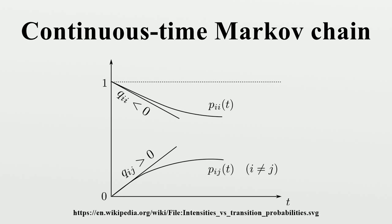The stationary distribution for an irreducible recurrent CTMC is the probability distribution to which the process converges for large values of T. For the two-state process, as T→∞ each row has the same distribution, which does not depend on the starting state. The row vector π may be found by solving the stationary equations with the additional constraint that elements sum to 1. For example, a CTMC with state space {bull market, bear market, stagnant market} has its stationary distribution found by solving πQ = 0 subject to the constraint that elements sum to 1.